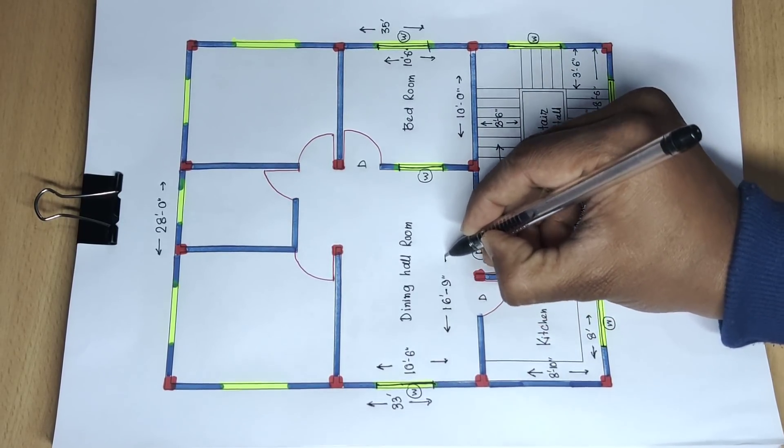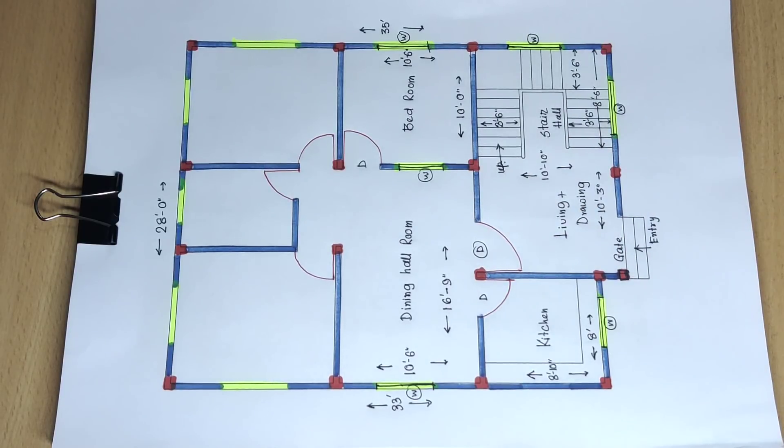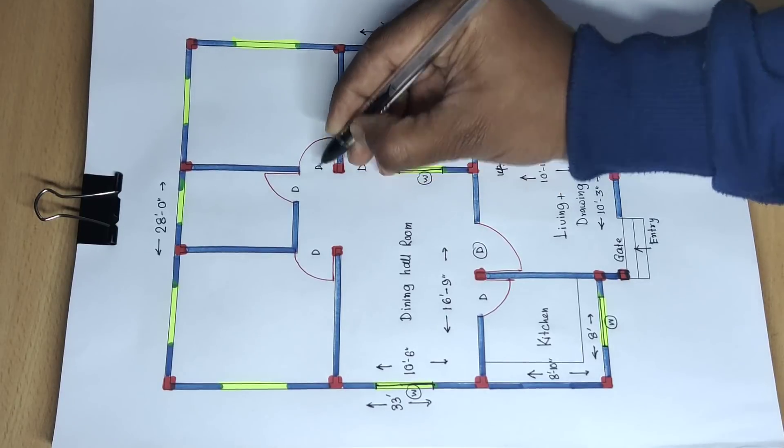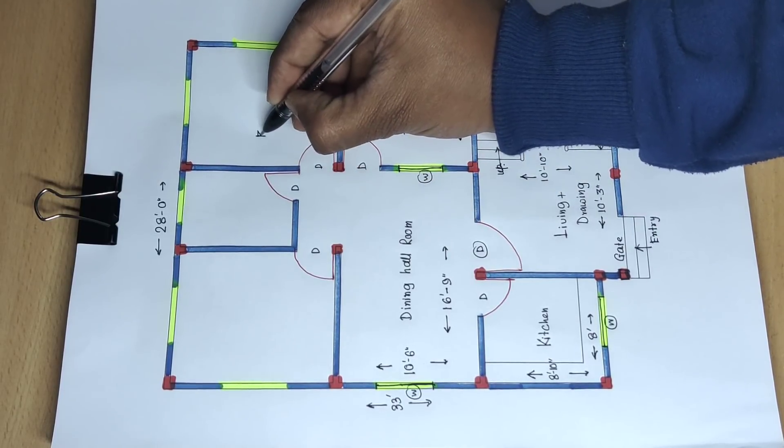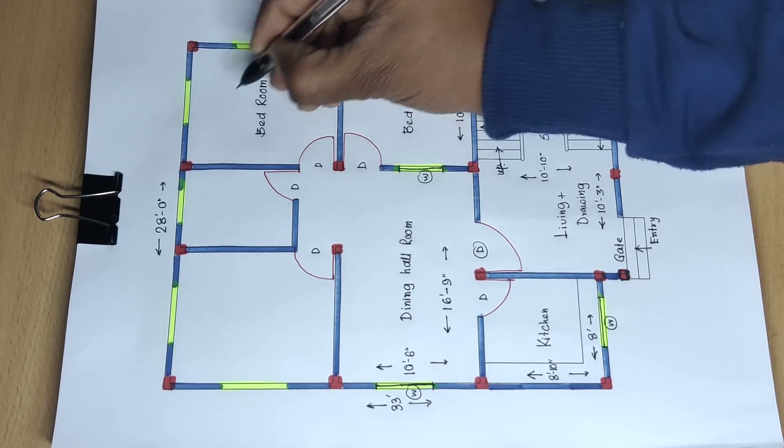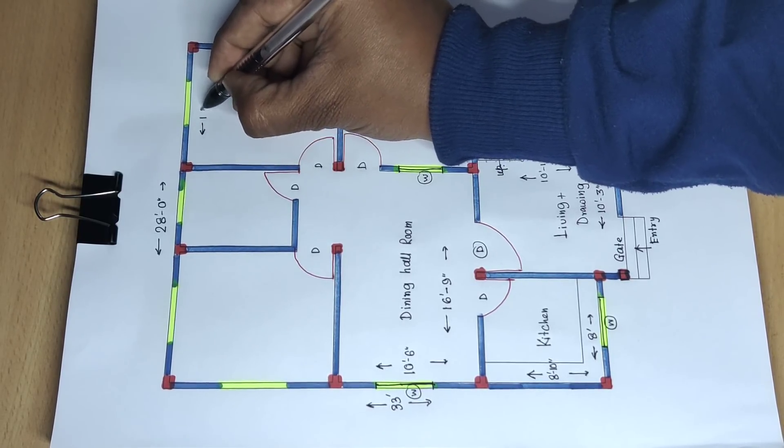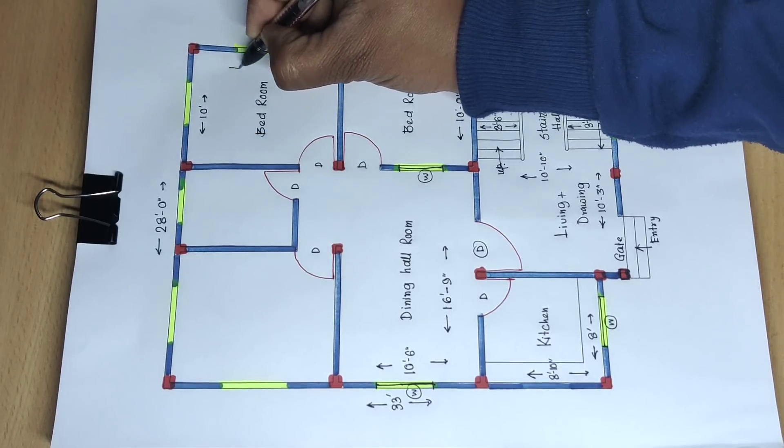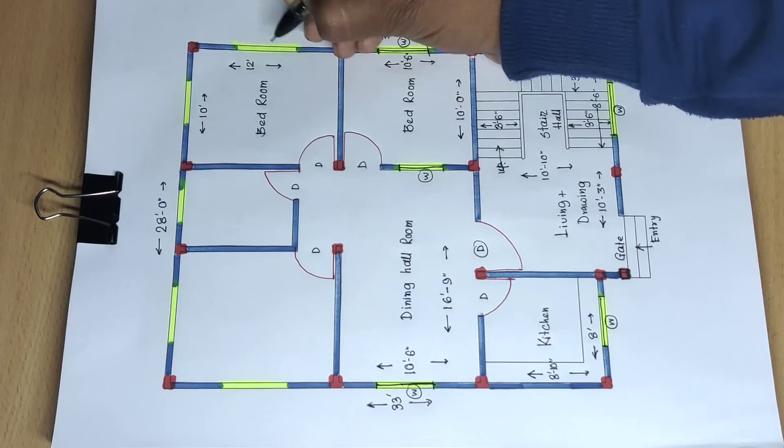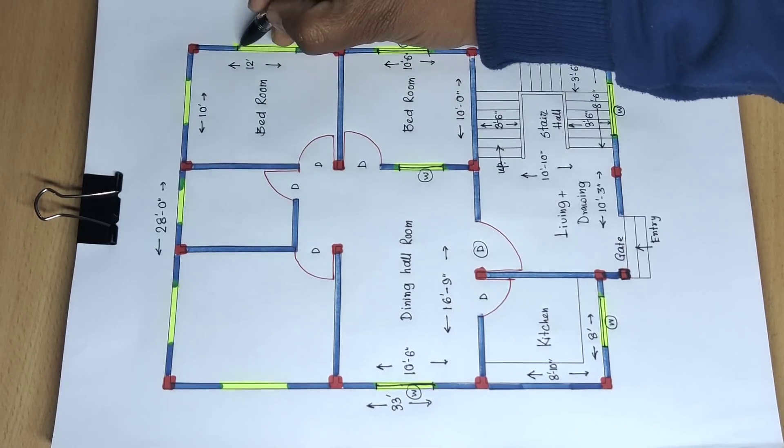This is the store area. And this is the second bedroom. Distance is 10 feet, and this side distance is 12 feet.